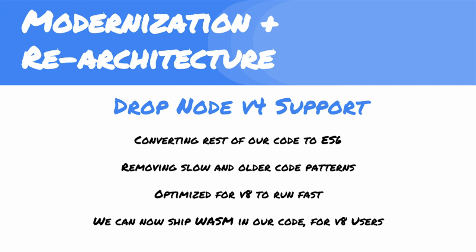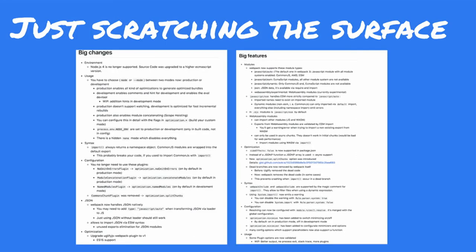A couple other things that really helped us was dropping Node 4 support — if you're using Webpack 4, you'll need to upgrade to Node 6. Not sorry. But this let us convert the rest of our code to ES6, remove slow and hard-to-read code paths, and ship code that's optimized for V8 to be fast. There are a lot of great changes — I'd be here for two hours going through every single one, so I encourage you to take a look at the change log.